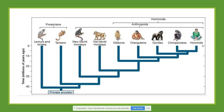Here we see a family tree based on what we call the traditional taxonomy. Traditional taxonomy is the type of taxonomy that is more focused on the morphology of the species to make classifications. Under this system, we have two groups: the prosimians, which include the lemurs, the lorises, and the tarsiers.